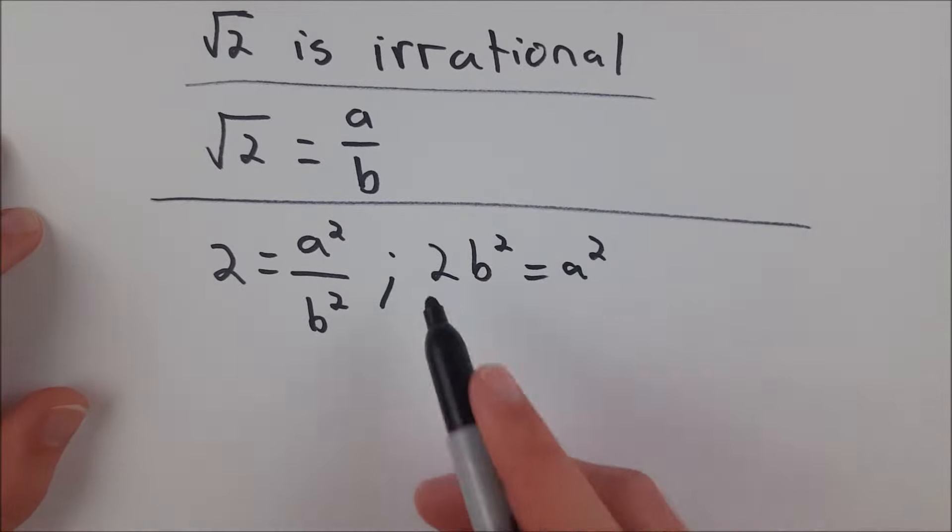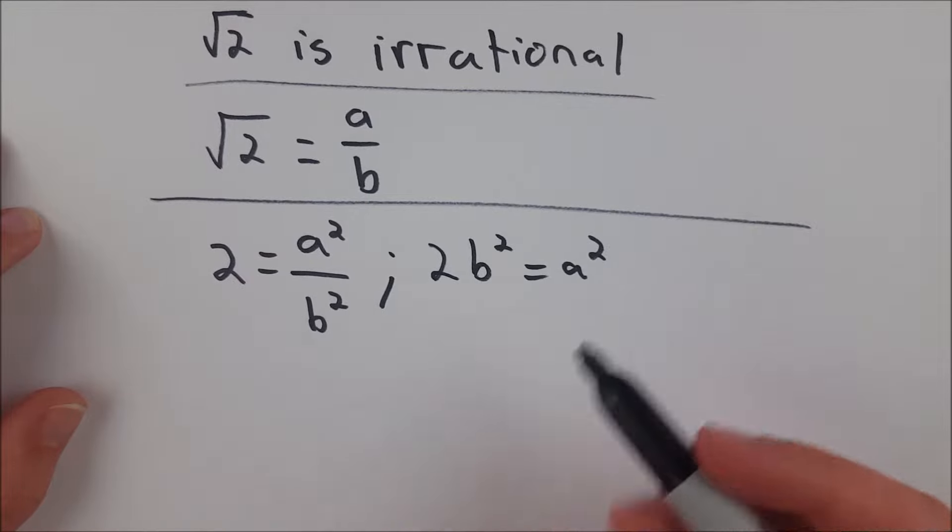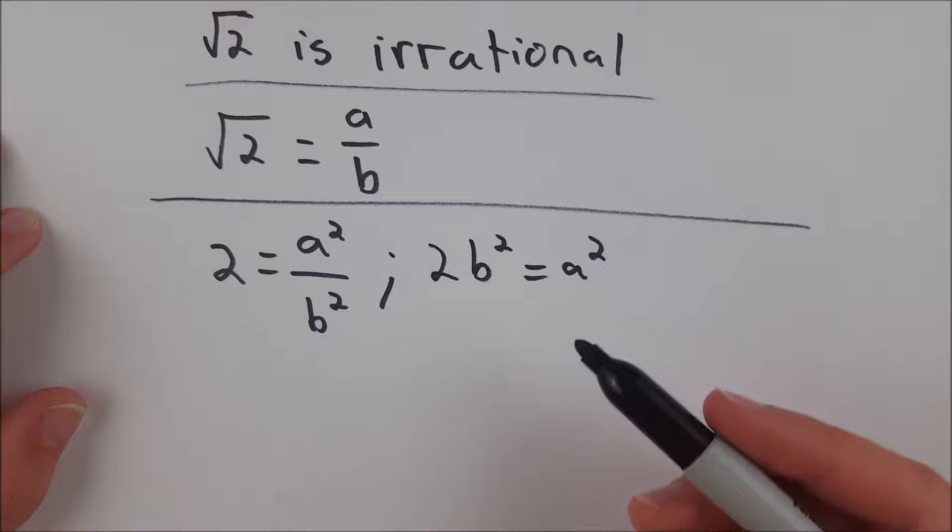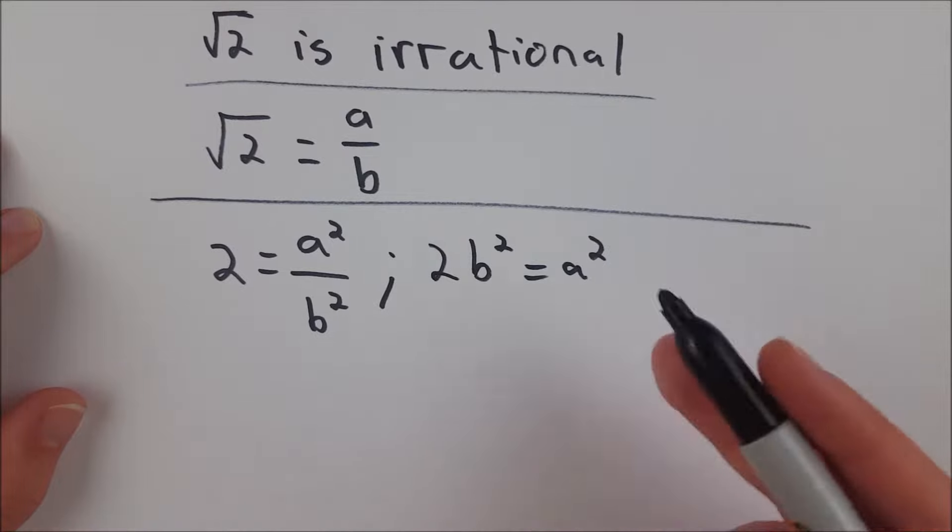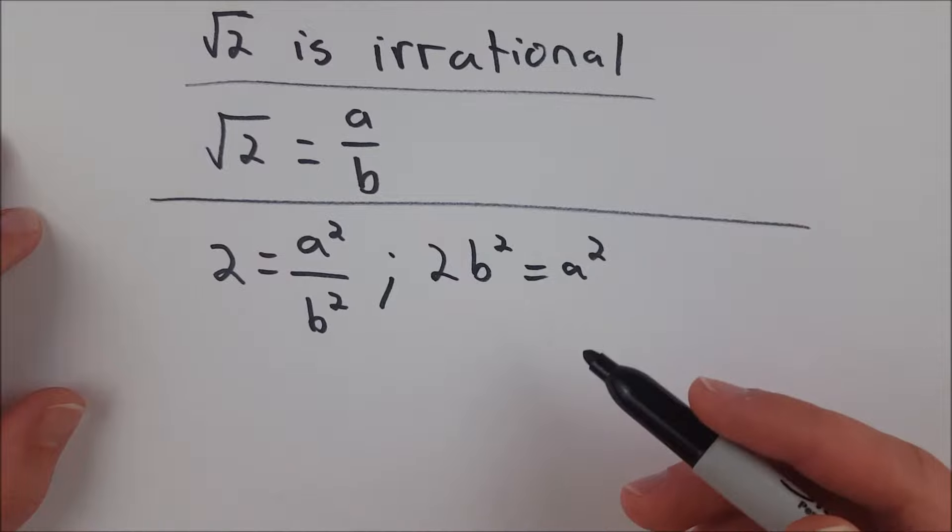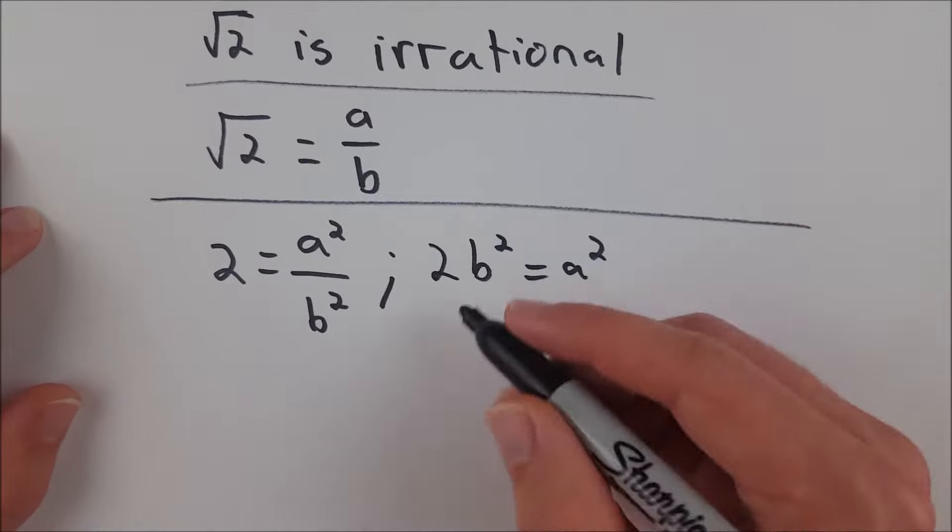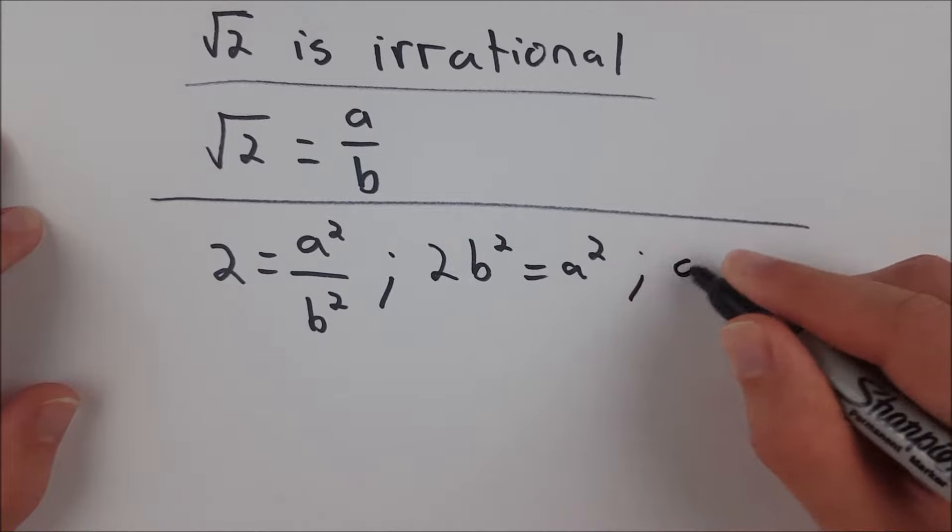So what I just said there was a squared has to be even. We know that because of this equality here. And in order for the square of a number to be even, the original number also has to be even. If you don't believe that, it's an easy proof and we can prove that another time or maybe I have already proved that on the channel. But in any event we know now that a is even.